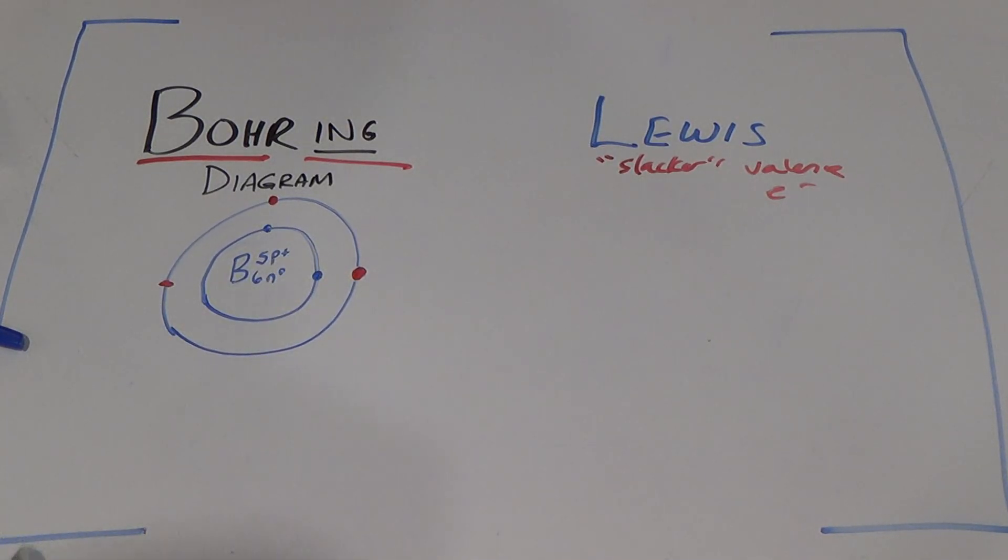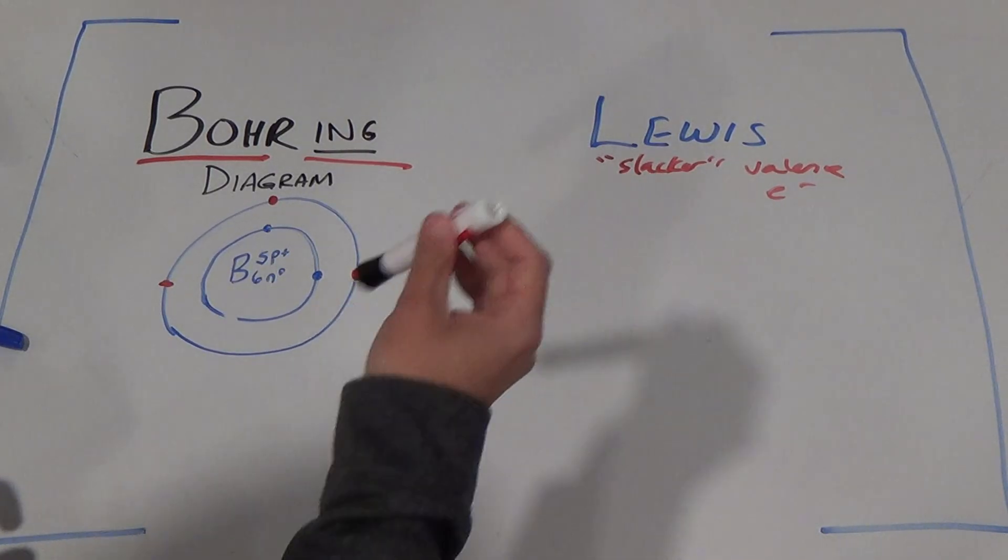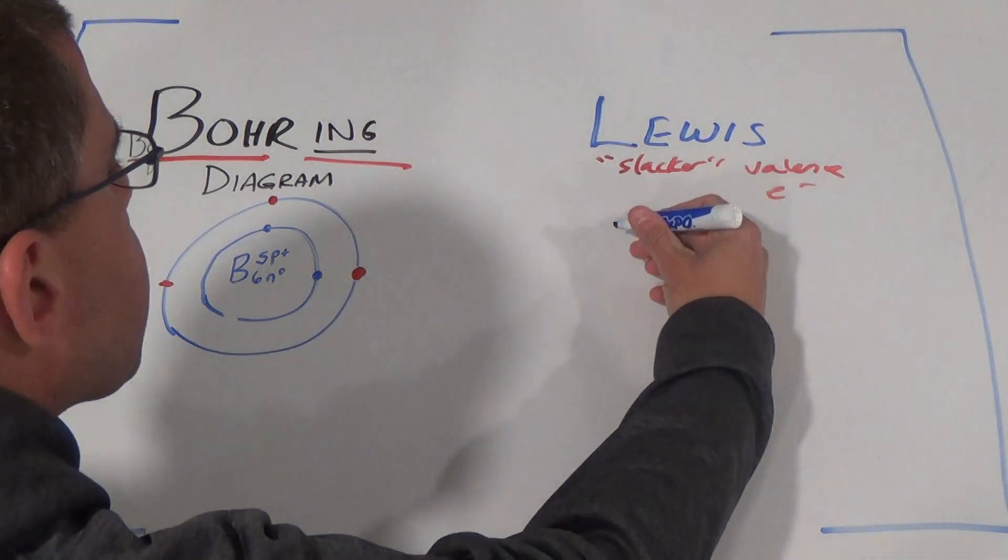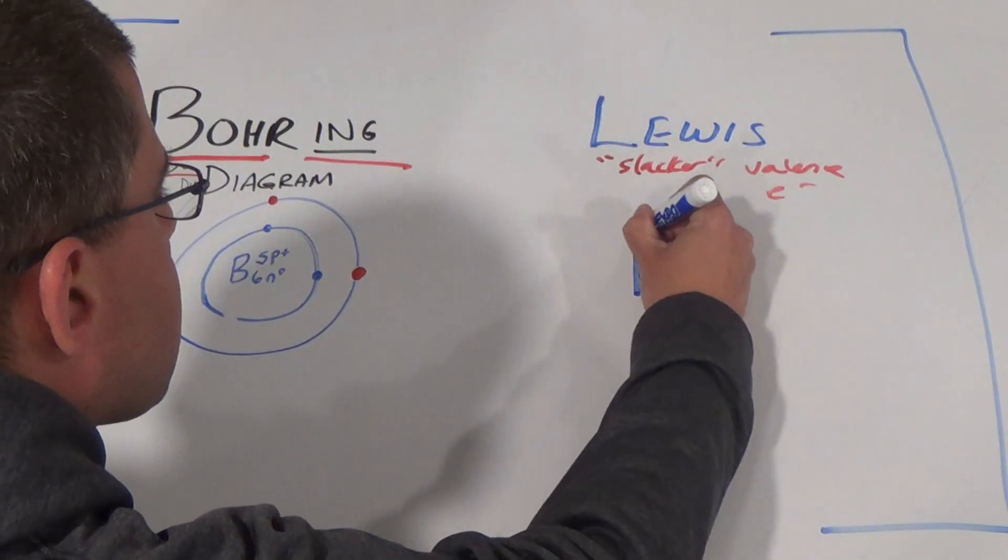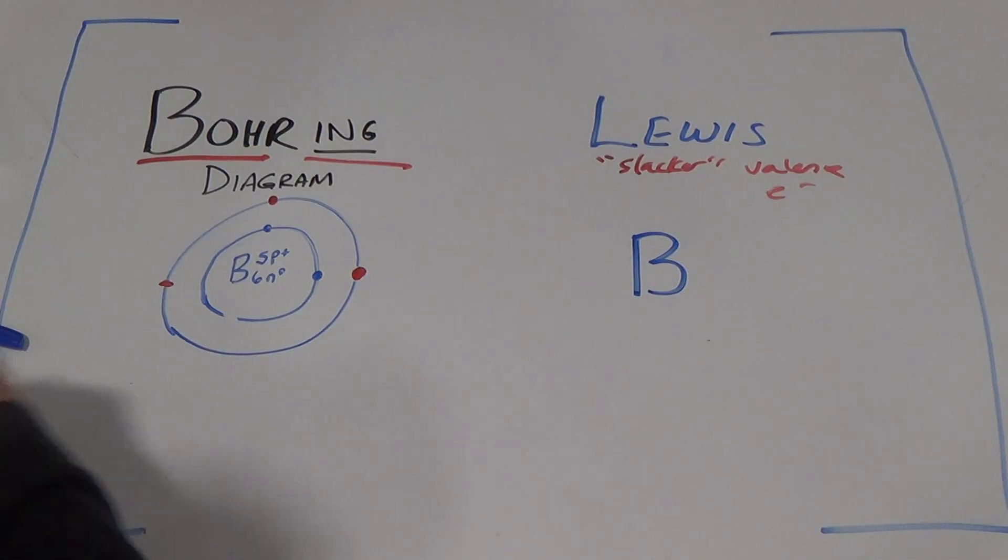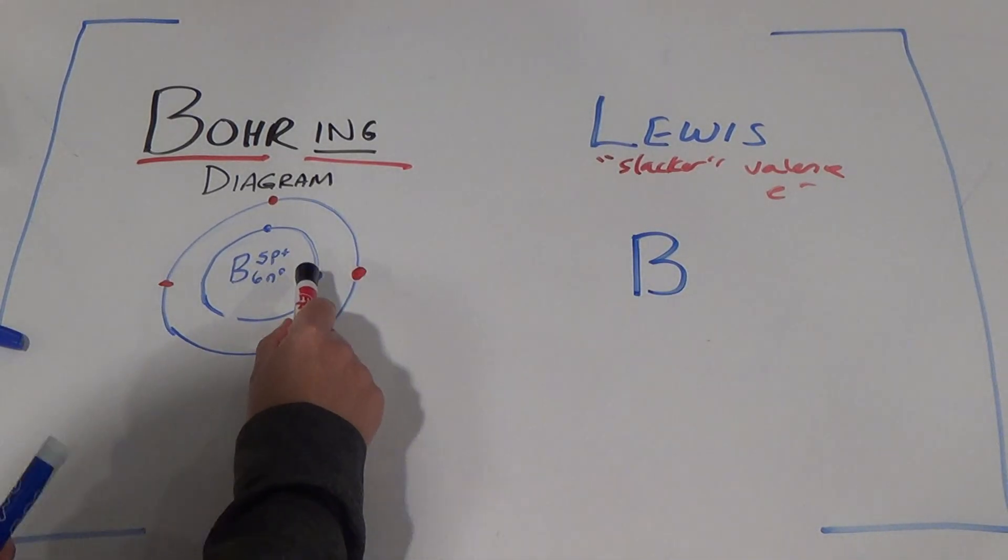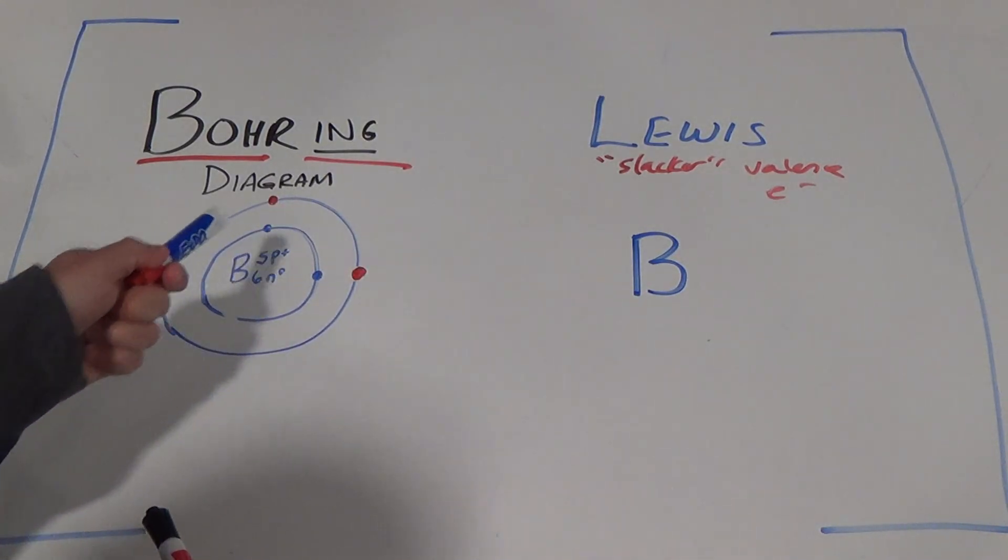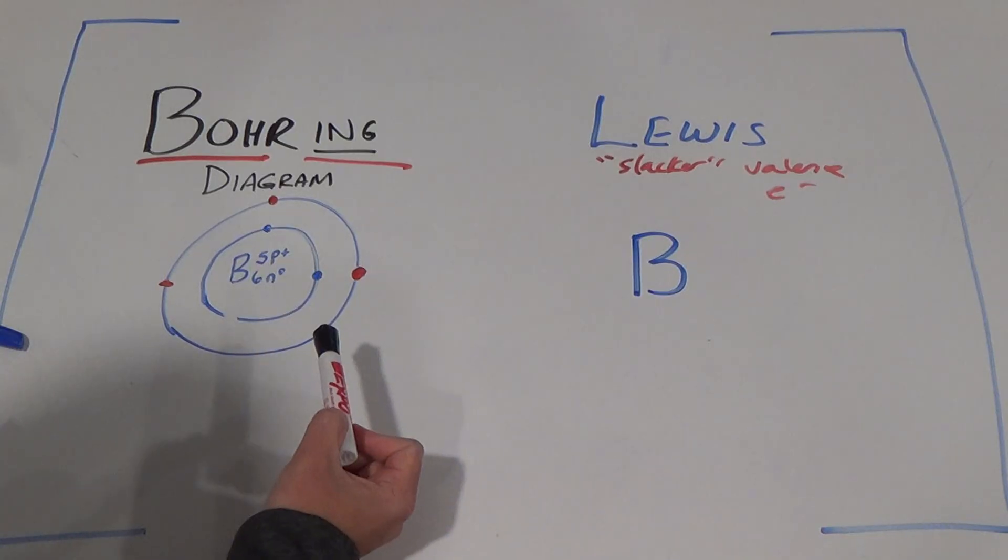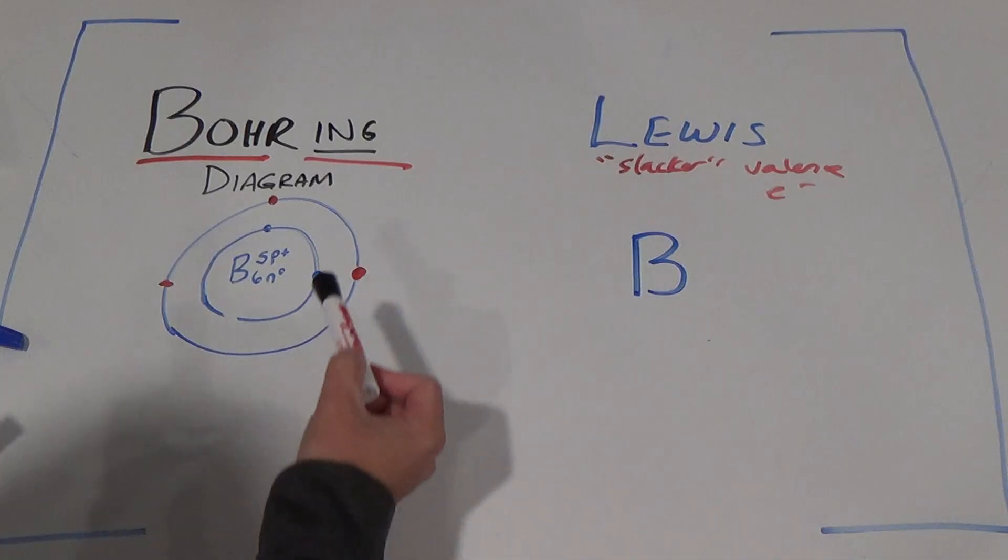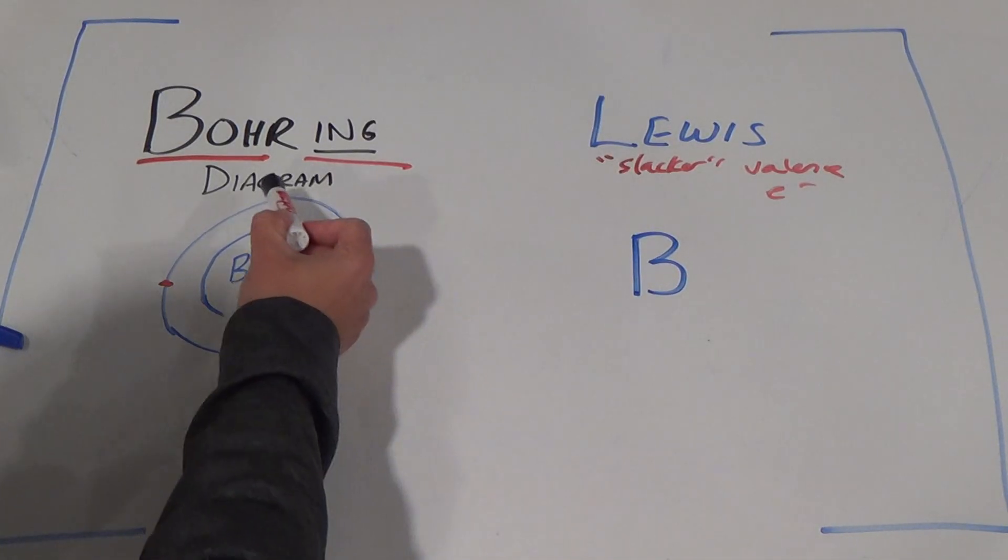So if they're really important, why can't we just draw those instead? Lewis said, let's make this more efficient. I'm a little bit of a slacker, I don't feel like drawing everything with a boring diagram. So here's the Lewis structure where all he wants to do is draw the valence electrons. I'm going to put the same B in the middle here for boron, and that'll be the nucleus. He's not worried about the energy levels, he just wants to show the valence electrons.